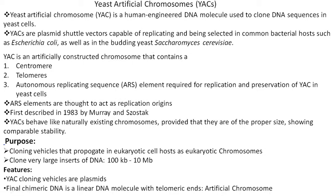YAC is an artificially constructed chromosome and it contains centromere, telomere, and ARS. ARS is autonomous replicating sequence, which is required for replication and preservation of YAC in the yeast cell. ARS elements are thought to act as replication origins. YAC was first described in 1983 by Murray and Szostak.